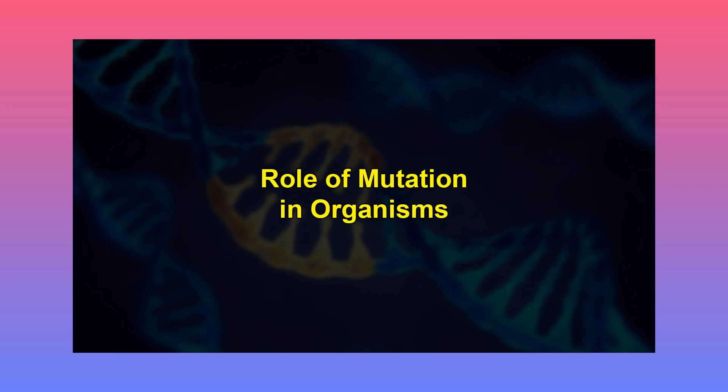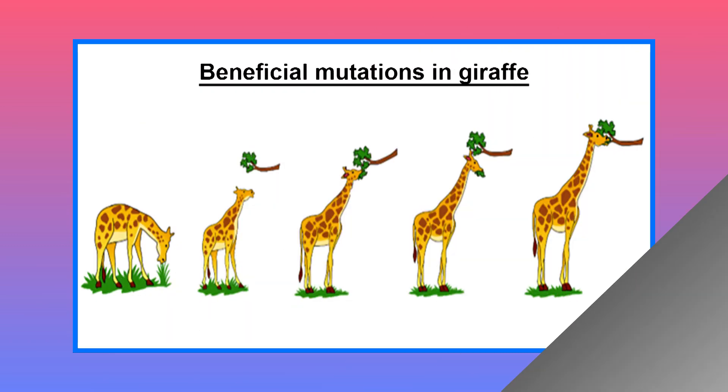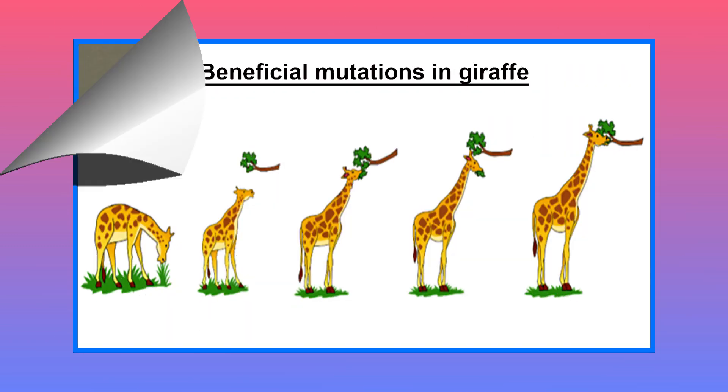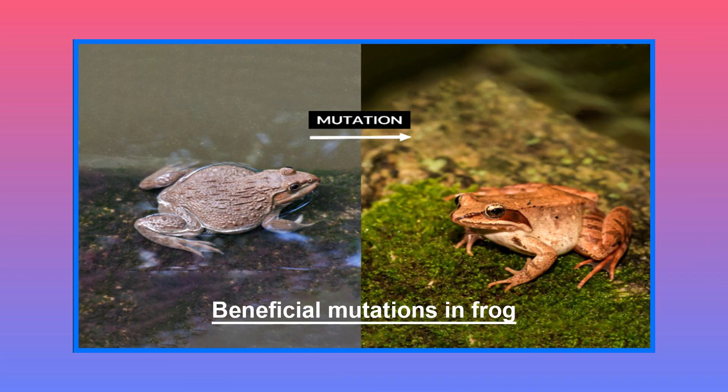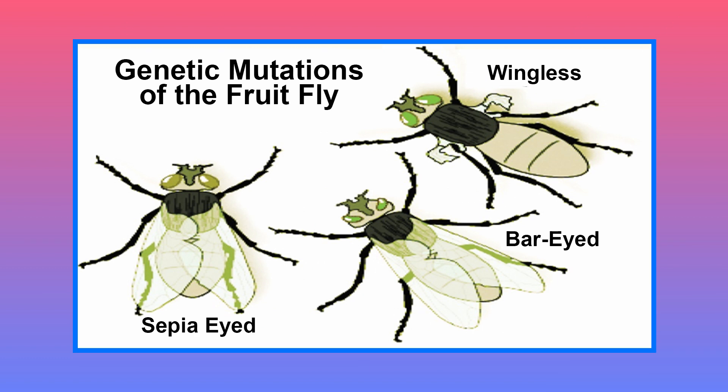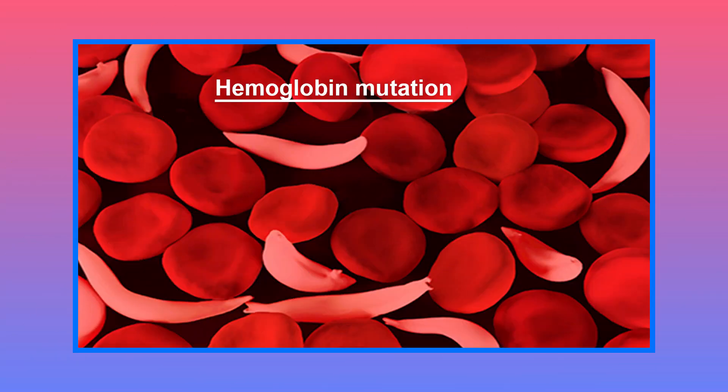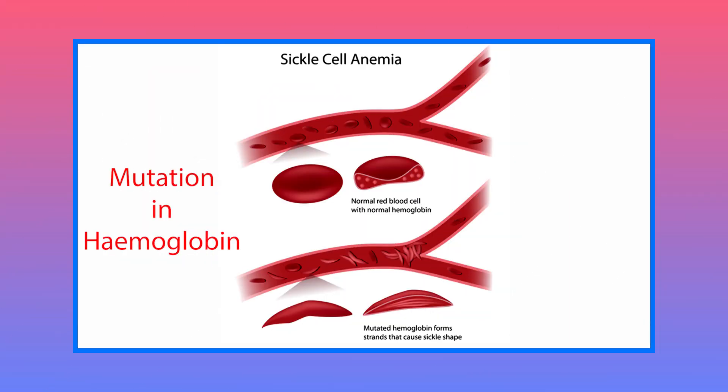Let's talk about the role of mutation in organisms. Some mutations have a positive effect on the organism in which they occur — they are called beneficial mutations. They lead to new versions of proteins that help organisms adapt to changes in their environment. Beneficial mutations are essential for evolution to occur. Mutation is the ultimate source of genetic variation and provides raw material for evolution to act. The classic example is the hemoglobin mutation HBS, which makes red blood cells take on a curved sickle cell shape. With one copy it confers resistance to malaria, but with two copies it causes sickle cell anemia. Mutations result in the formation of new alleles.